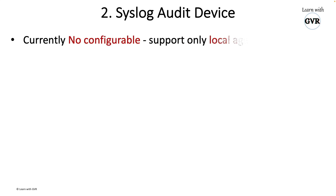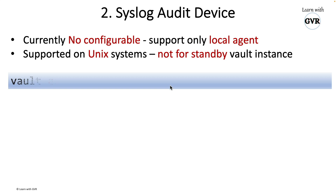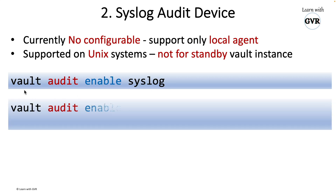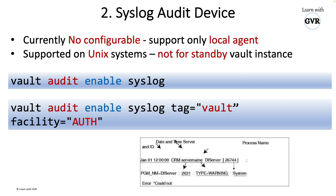For the syslog audit device, as per the documentation, no remote syslog configurations are supported — only the local agent is supported. This means it only works for the active Vault instance, not standby instances. The command is 'vault audit enable syslog', similar to 'vault audit enable file'. You can specify a tag and facility. A syslog entry follows a standard format with severity levels, as shown on the Cisco official website.